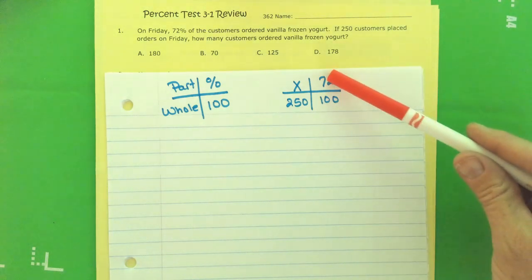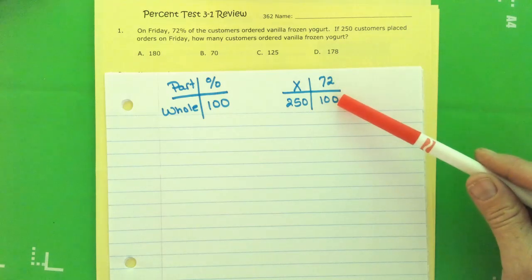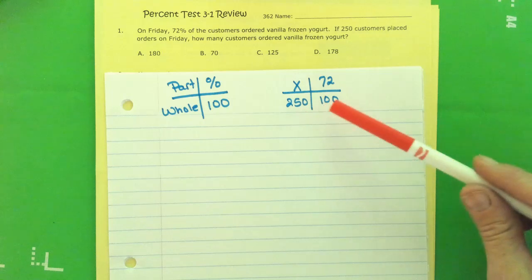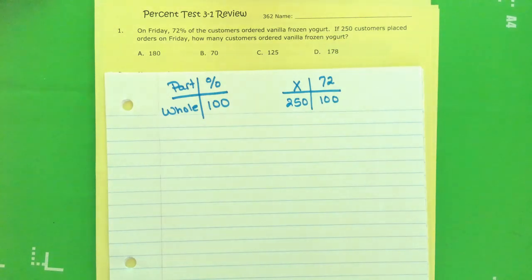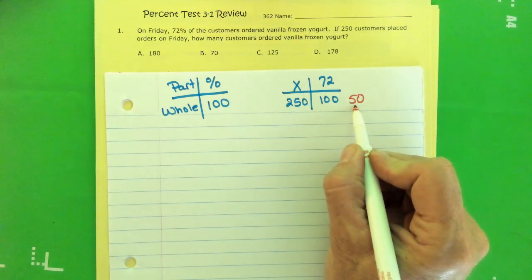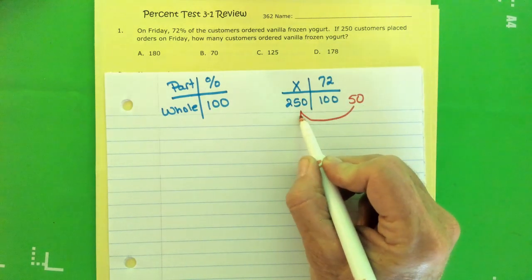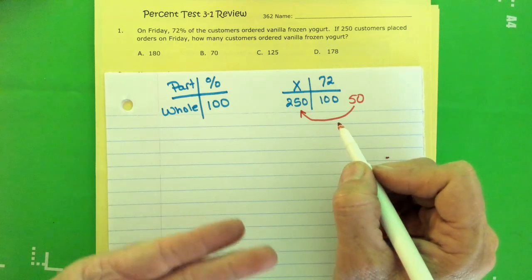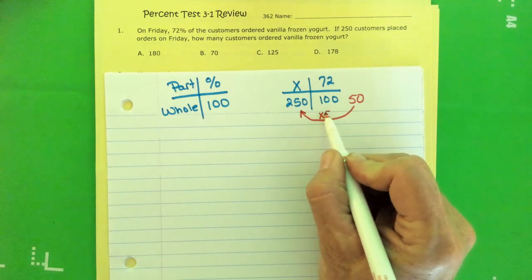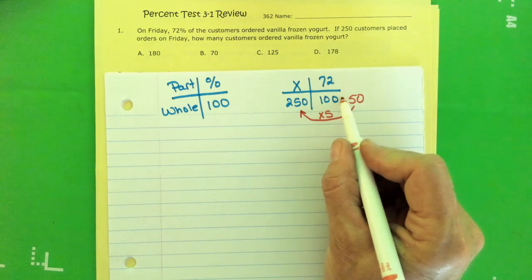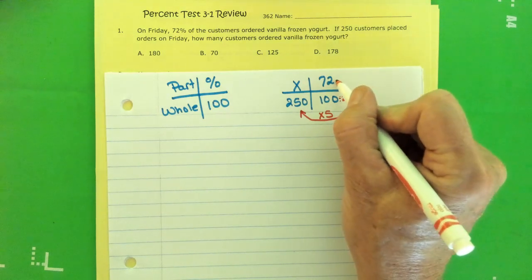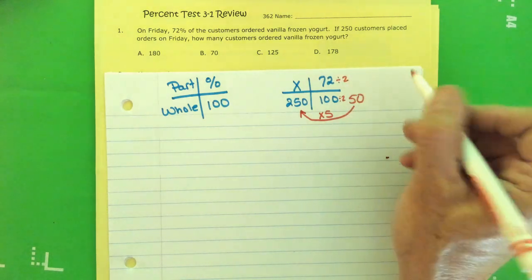I got my 72% out of 100 and I know there's 250 total customers. They're asking for how many ordered vanilla yogurt, that wasn't everybody, that was just 72%. I'm trying to see the relationship between 72 and 100. I don't see any way to multiply or divide friendly between these two numbers or the 100 and the 250. But I could make my 100 reduced down if I cut it in half to 50.